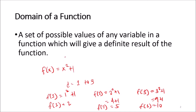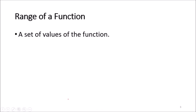That is what we know as the domain of a function — the set of possible values of x which will give a definite result or a definite value for the function. If x = 1, we get a definite value of 2.